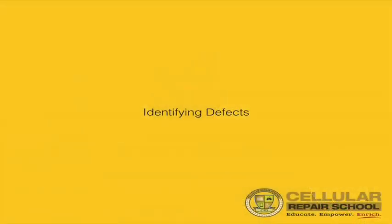Last but not least, we're going to get into identifying defects. In my opinion, this is the most important part, which is why we saved it for last. It's very important to understand all the preceding topics first, because they give you a more sound understanding and more clarity regarding the defects — how to find them, what's causing them — which is going to make your triage process more efficient and give you a healthier refurb program.